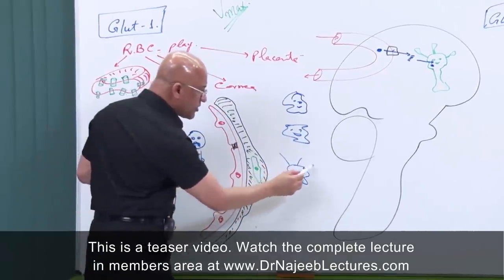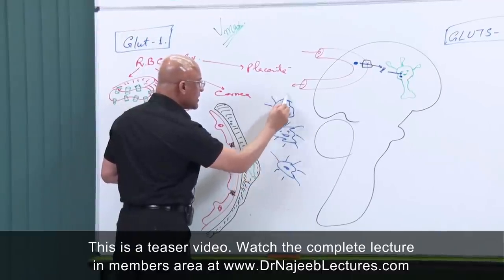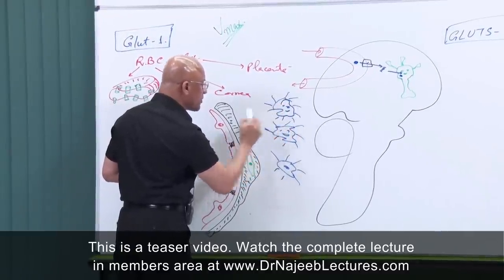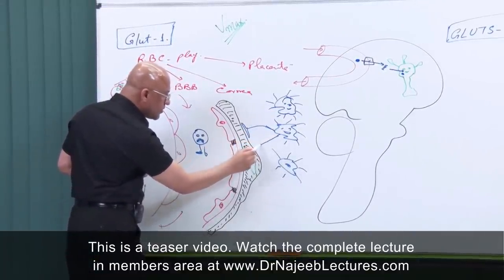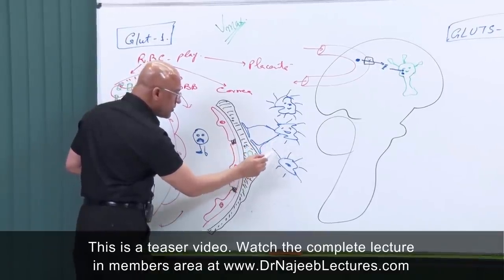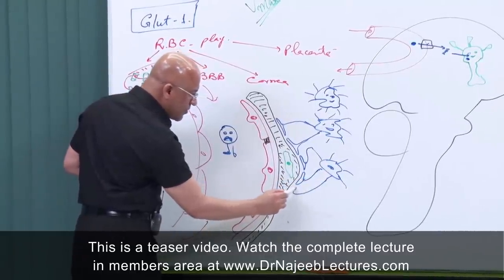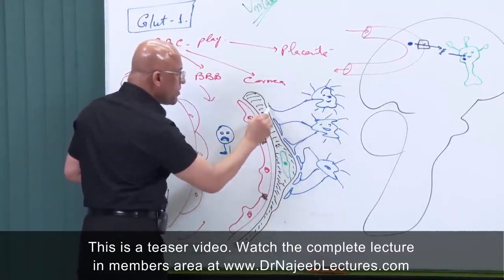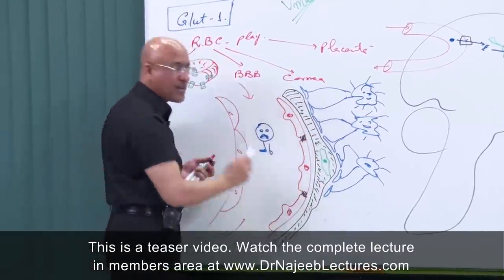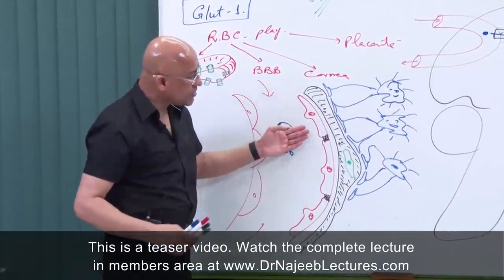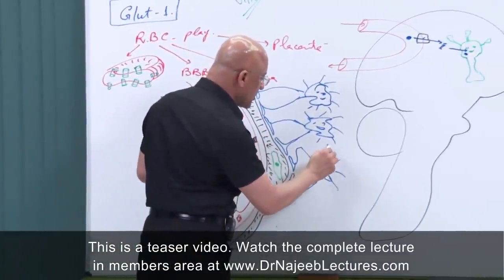Astrocytes have many foot processes, and these foot processes expand and wrap around the capillaries, making an additional barrier. Certain substances must cross these foot processes to reach the interstitial fluid, and then of course the neurons are beyond that.